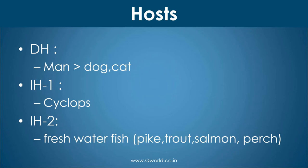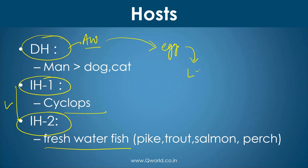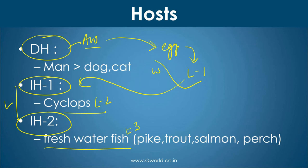Now, hosts. For most helminths there are two kinds of hosts. The definitive host is where the adult worm lives, and that is usually human or man. There are two intermediate hosts here: first is cyclops, and second is freshwater fish. The intermediate host is where the larval forms live. The adult worm releases eggs, which hatch into the first larval stage — the coracidium — in water. This is taken up by cyclops, which develops it into larval stage two, the procercoid larva. Cyclops is eaten by fish, where the third larval stage — the plerocercoid larva — develops. Fish is eaten by humans where the adult worm lives.